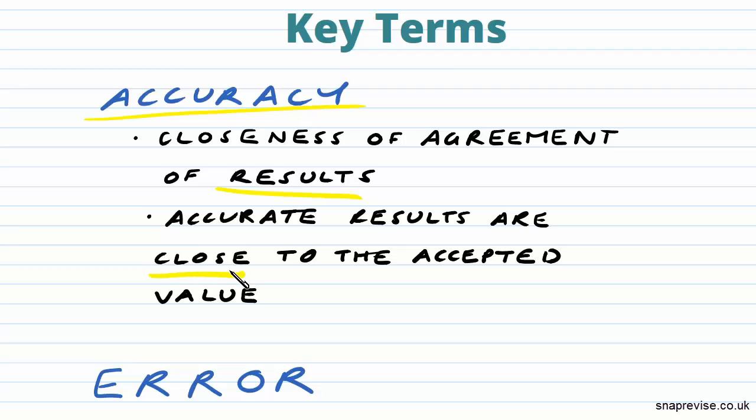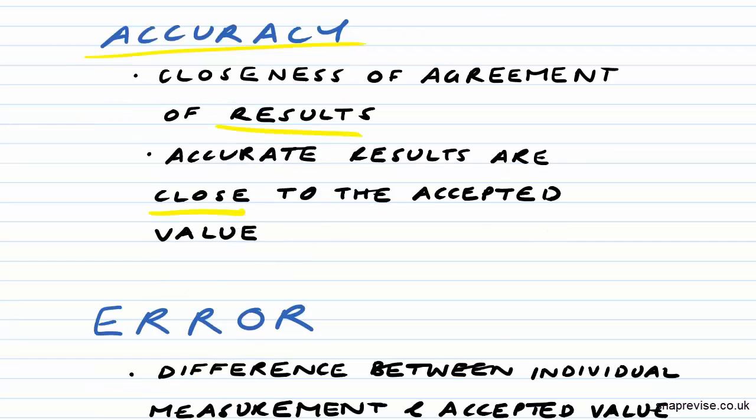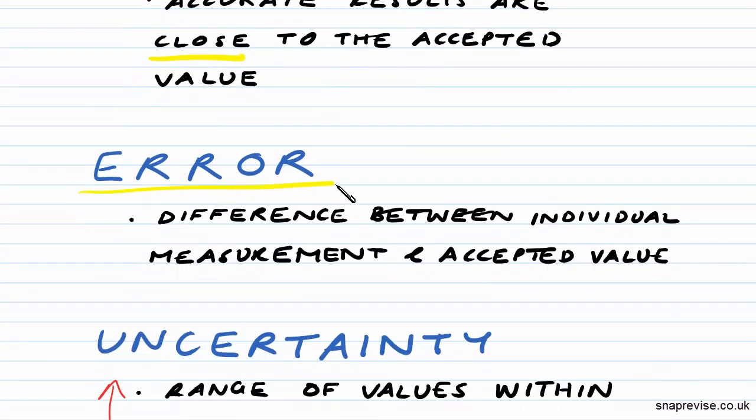Accurate results are close to this accepted value. The second key term is error, something we'll be looking closely at in today's video. The error is a difference between an individual measurement and an accepted value.